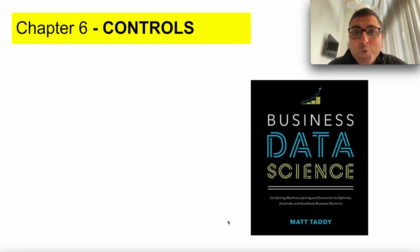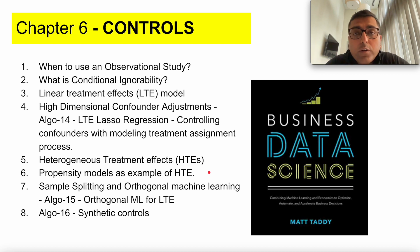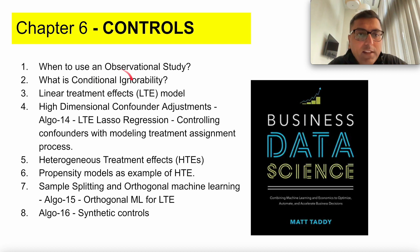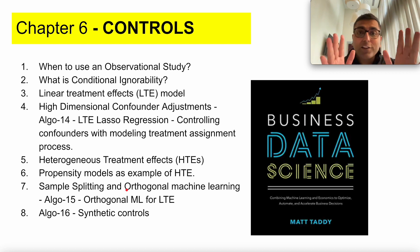Welcome to Chapter 6, Controls. You might be wondering what is the reason for naming a chapter Controls. We will find out at the end of this chapter. We're going to learn about various techniques on how we can do causal inference when we cannot run an experiment. There are various mechanisms: observational study, which depends on the concept of conditional ignorability, linear treatment effects, high-dimensional confounder adjustments, heterogeneous treatment effects, propensity models, sample splitting, and synthetic controls.